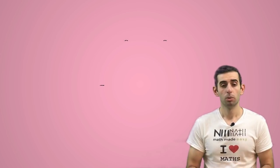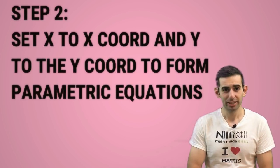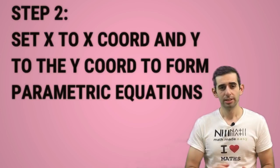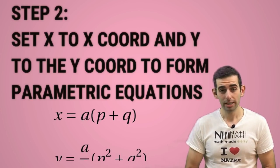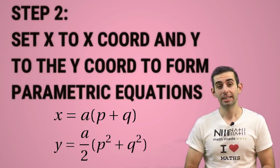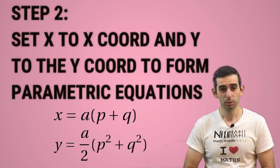What's step two? We want to create parametric equations by letting x equal the x-coordinate and y equal the y-coordinate. So now we have x = a(p+q) and y = a(p²+q²)/2. These are parametric equations where we have to eliminate p and q to get a Cartesian equation just in terms of x and y.